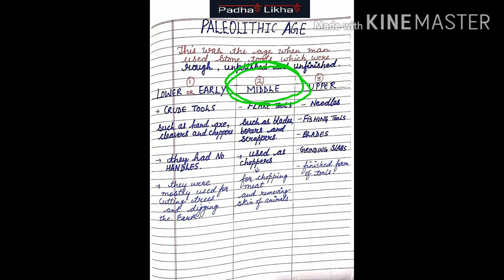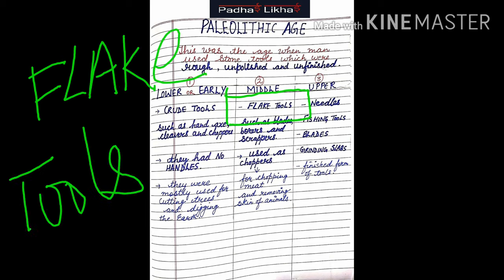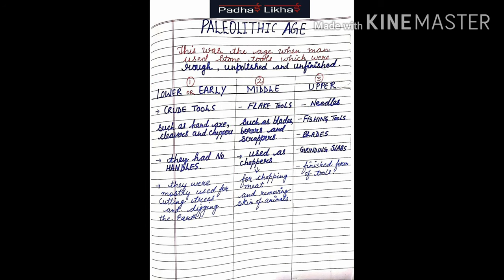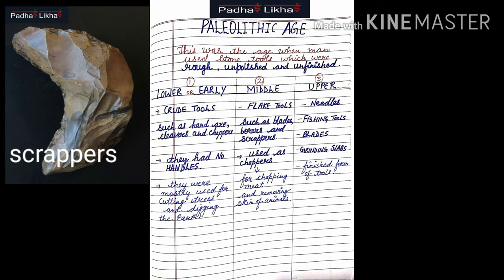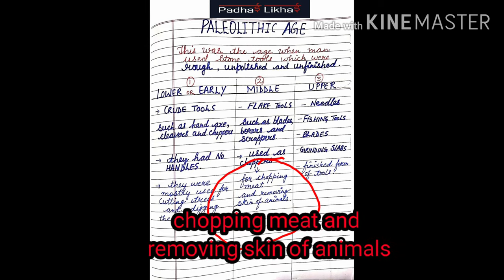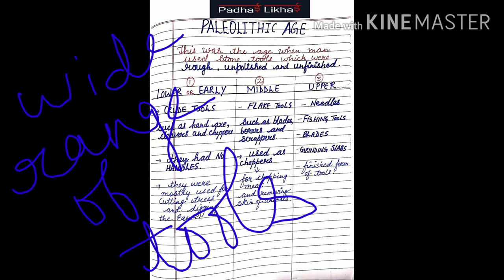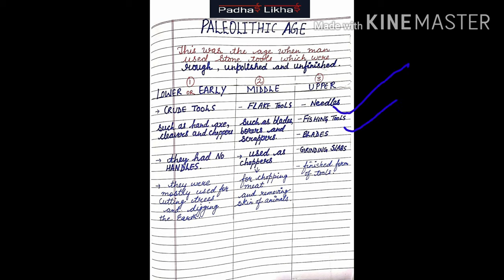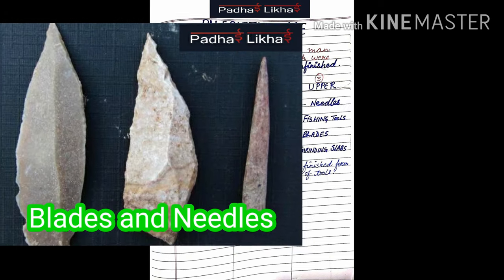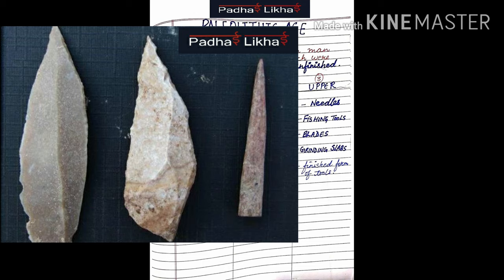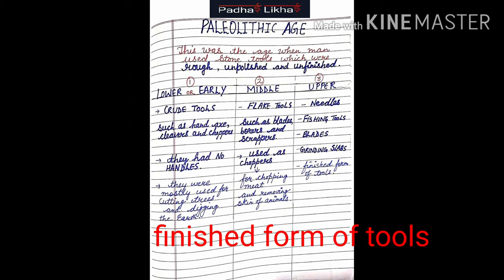In the Middle Paleolithic Age, prehistoric men used flake tools such as blades, borers, and scrapers. In the Upper Paleolithic Age, we see a wide range of tools such as needles, fishing tools, blades, board stones, and grinding slabs. This period is characterized by a finished form of tools.